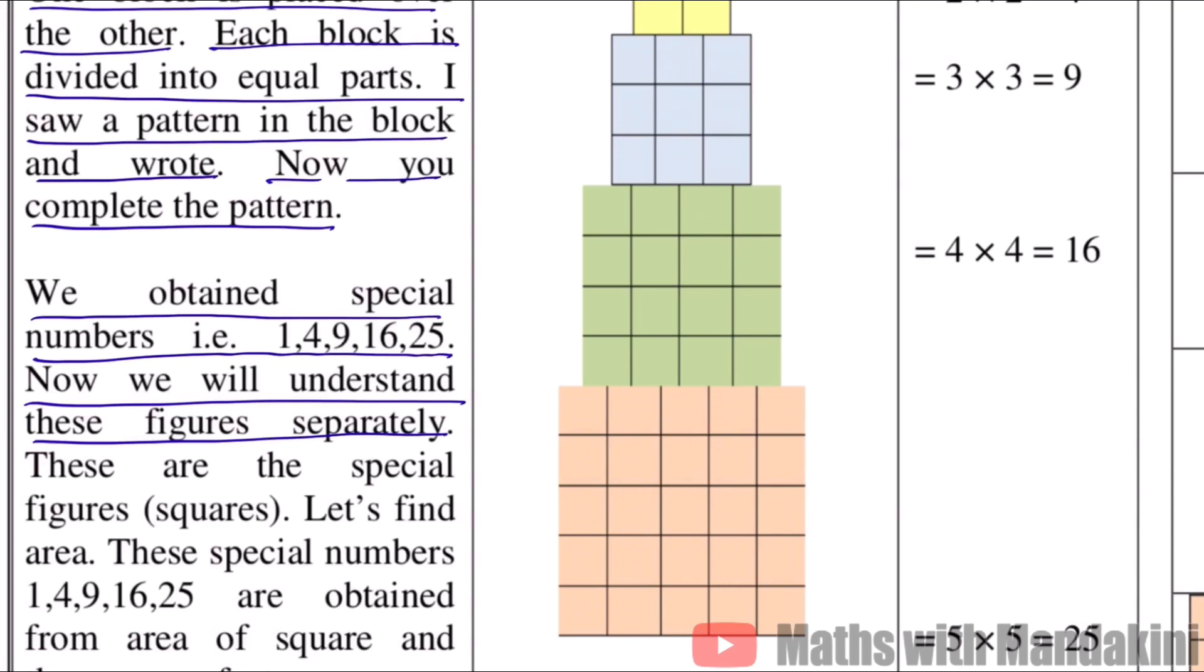The first block is divided into equal parts. So horizontally we count how many parts are there: one, two, three, four, five. And vertically: one, two, three, four, five. So each line is 5 parts.